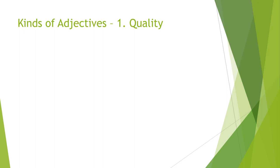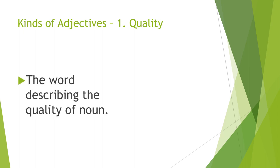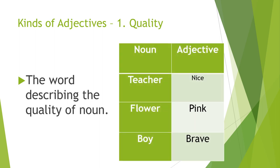Adjectives — we are dealing with kinds of adjectives. Number one is Quality. The word describing the quality of the noun comes under the category of quality adjectives. For example, with three nouns — teacher, flower, and boy — the quality adjectives are: nice (teacher nice by nature), pink (flower pink in color), and brave (boy brave by his act).